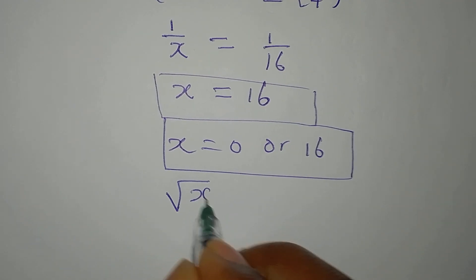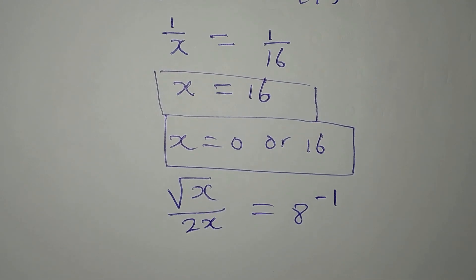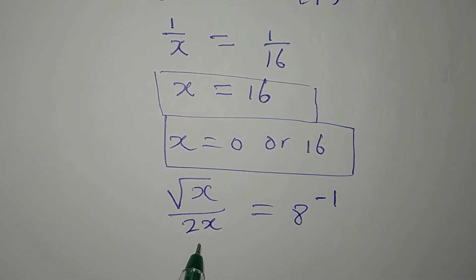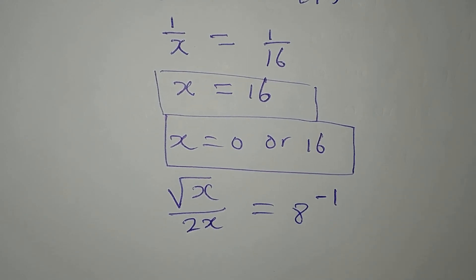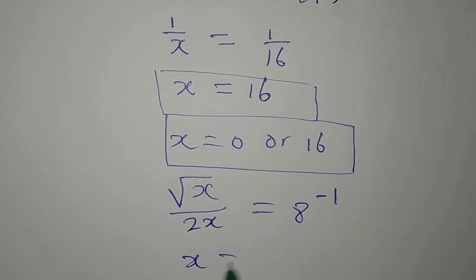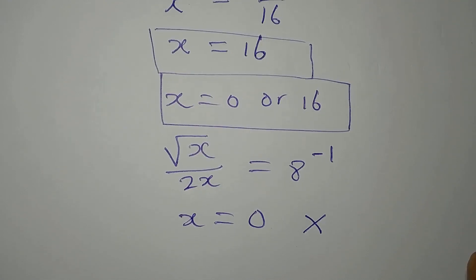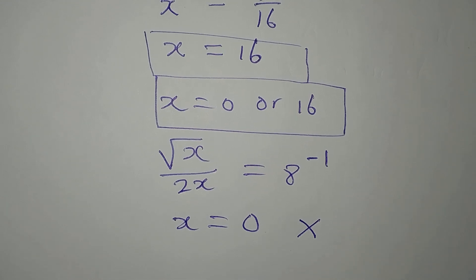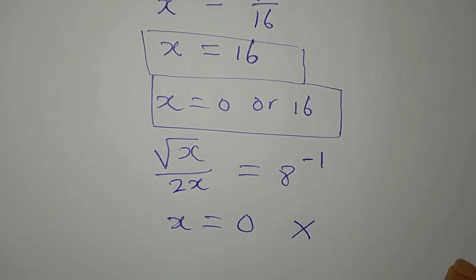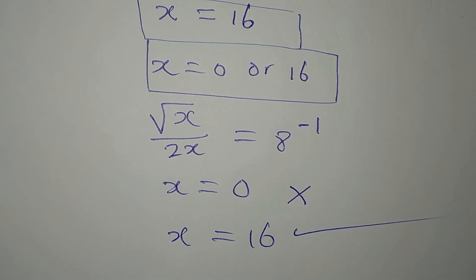Let's substitute back into the original equation — square root of x over 2x equals 8 to the power of negative 1. You can see that x equals 0 will not satisfy the equation, because substituting zero gives an undefined expression. Therefore, x equals 0 must be rejected, and the valid solution is x equals 16.